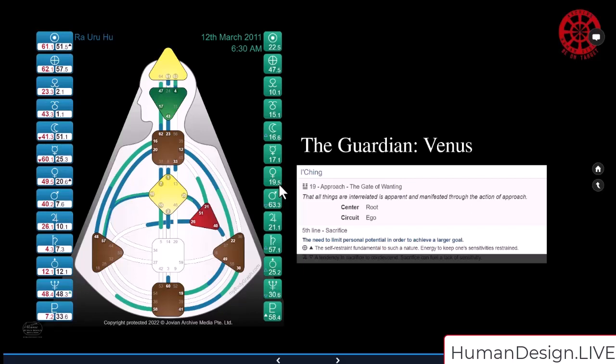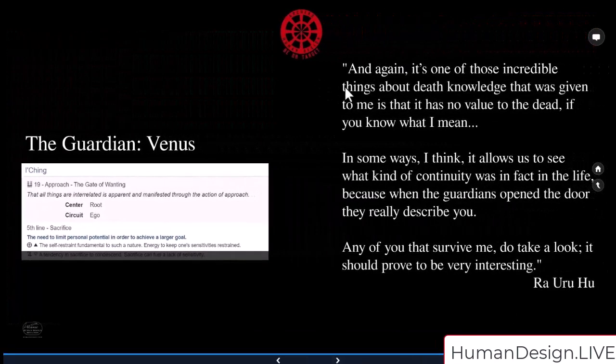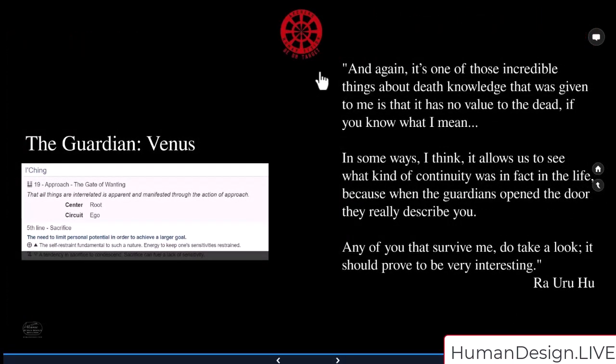So we had a fully resonant channel with the guardian of the transit, of his death cycle. And Ra says, again, it's one of those incredible things about death knowledge that was given to me, is that it has no value to the dead, if you know what I mean. In some ways, I think it allows us to see what kind of continuity was in fact in the life. Because when the guardians open the door, they really describe you. Any of you that survived me, do take a look. It should prove to be very interesting.